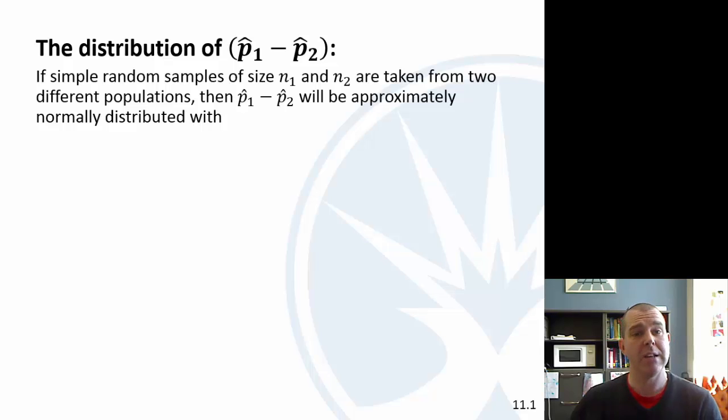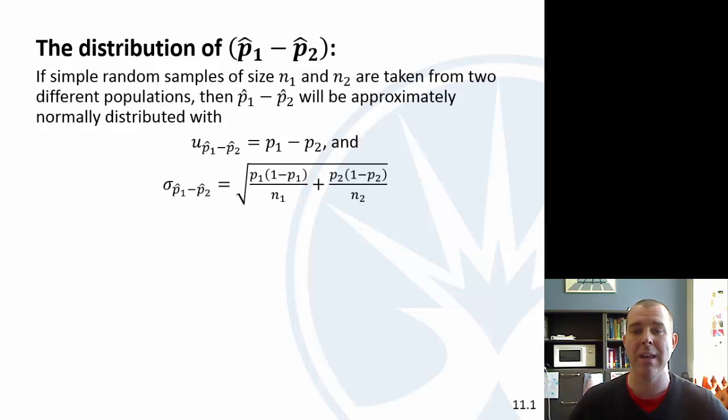Here's the criteria. If we have simple random samples taken from two different populations, then p hat 1 minus p hat 2 will be approximately normally distributed with this mean and standard deviation. Don't stress yourself out about those formulas. We're going to be using StatCrunch to do these calculations.